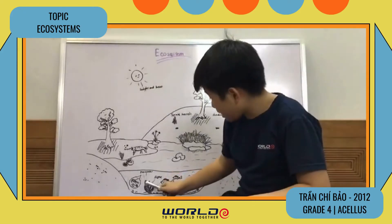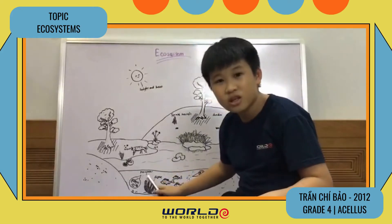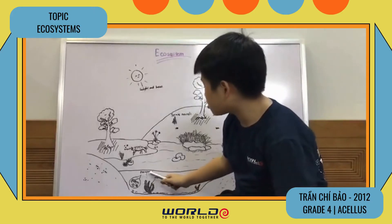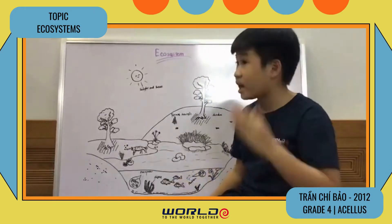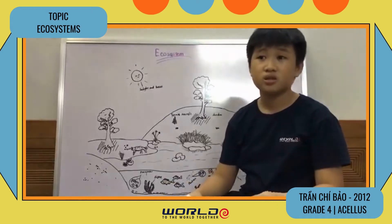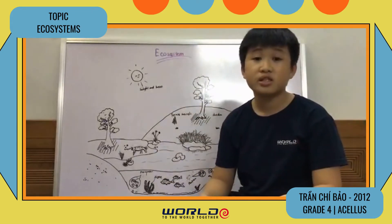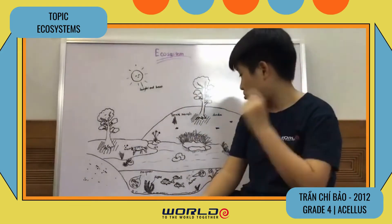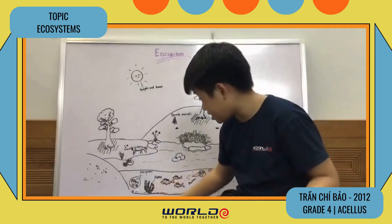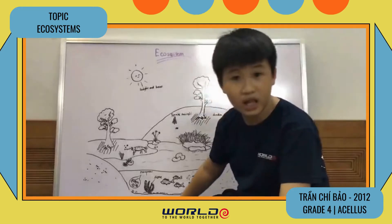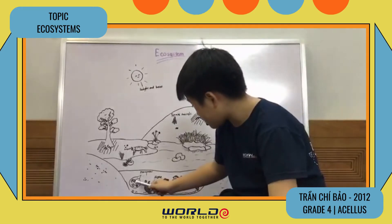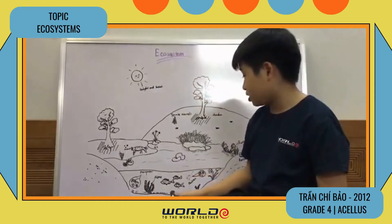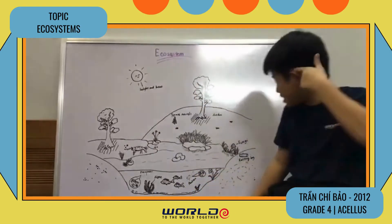Do you know these small, small animals? They are called protozoans. They're not a virus - they are animals, but they are very tiny, like the size of a virus. You can see many different small animals here - this one looks like an octopus, and this one looks like a ball.